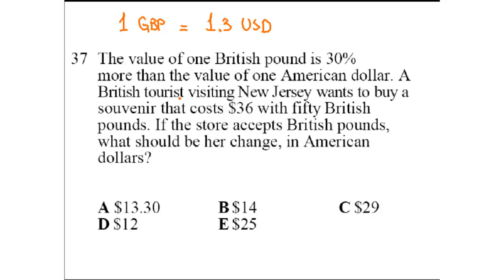A British tourist visiting New Jersey wants to buy a souvenir that costs $36 US dollars with 50 British pounds. So he's going to pay 50 British pounds if the store accepts British pounds. So first thing, 50 great British pounds equals how many US dollars? 50 times 1.3. 50 times 1 is 50. 50 times 0.3 is 15. So add them, you get 65 US dollars. So how much money is he going to pay in dollars? 65.